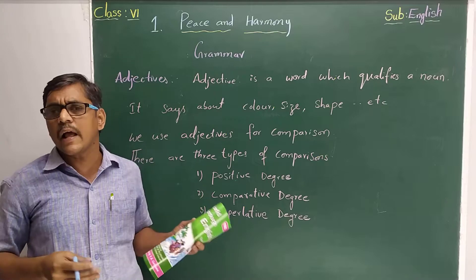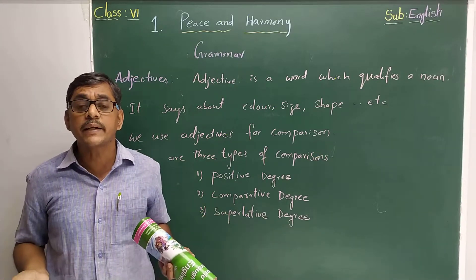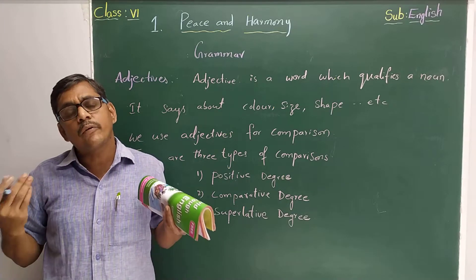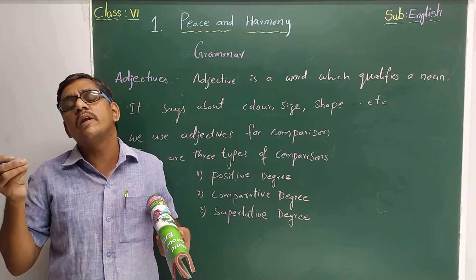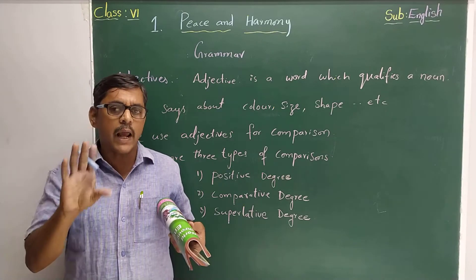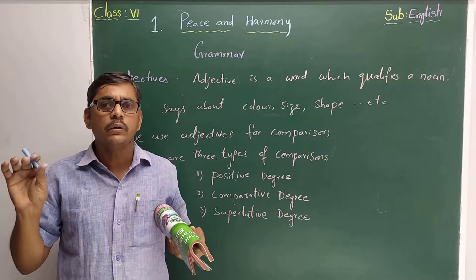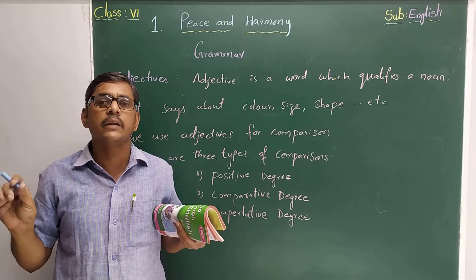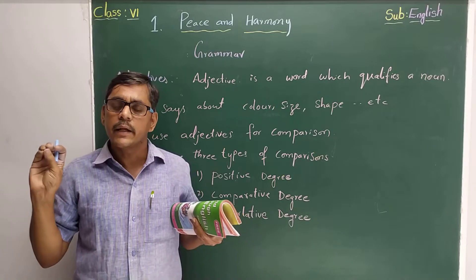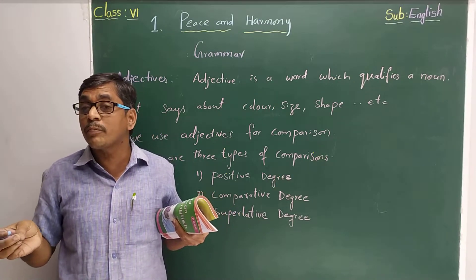Next is interjection. Interjection is nothing but our strong feelings. Sometimes we feel sad, sometimes we feel happy — all those expressions we show through interjection. So like that we have: noun, pronoun, verb, adjective, adverb, preposition, conjunction, and interjection. Totally eight parts of speech are there. Among them, the very important and very useful one is the adjective.